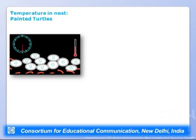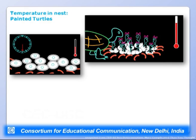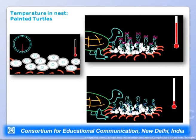In painted turtles, whether a male or female is produced depends on the temperature of the nest. All embryos are identical to start with, but at a critical period, the nest temperature determines sex: higher temperatures produce females and lower temperatures produce males.